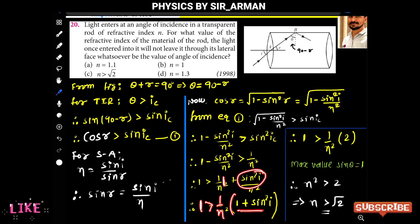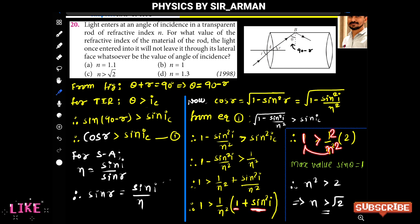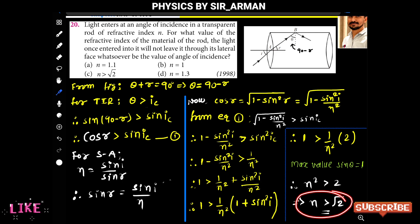The maximum value of sin(i) is 1, so 1 + sin²(i) has a maximum of 2. Therefore 1 > 2/n², which gives n² > 2, so n > √2. The correct answer is option C.